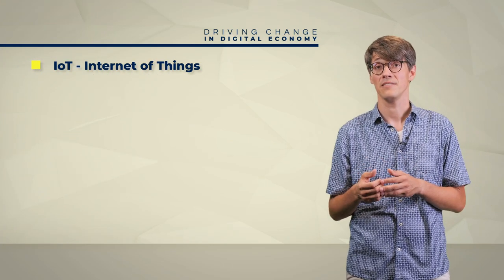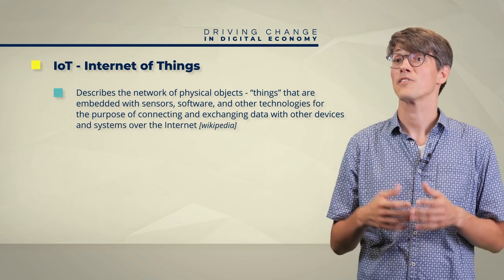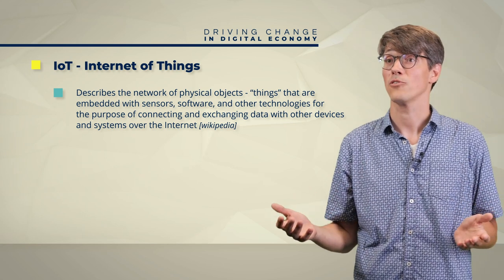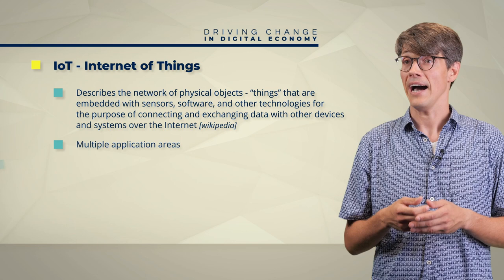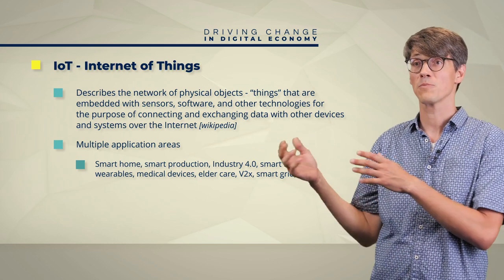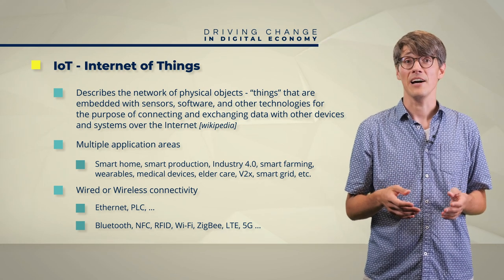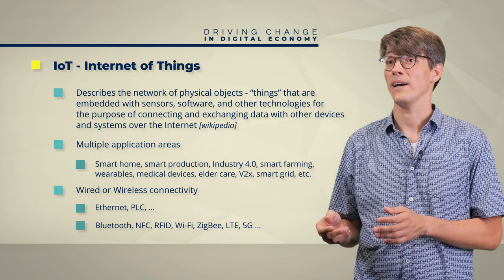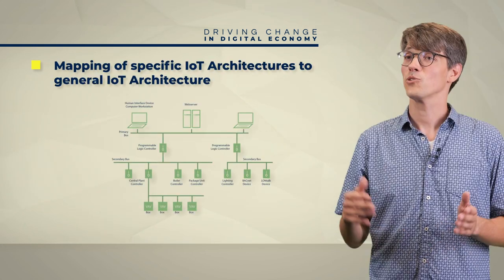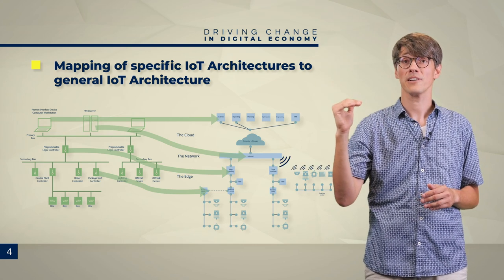Let us also talk about IoT — the Internet of Things — or IIoT, the Industrial Internet of Things. IoT describes the network of things embedded with sensors, actuators, and controllers, connected to the Internet with the purpose of collecting and exchanging data. IoT and IIoT cover multiple application areas, from smart home to smart farming, smart production, wearables, and medical devices, connected wirelessly or hardwired. Rationals for IoT relate to increased integration, improved awareness of the system for the environment, improved controls, and enhanced or new user features.